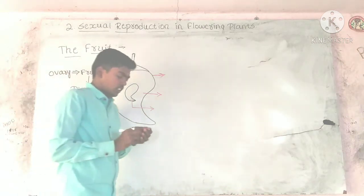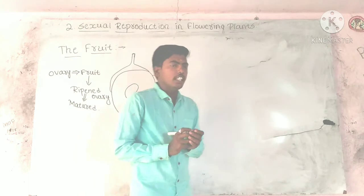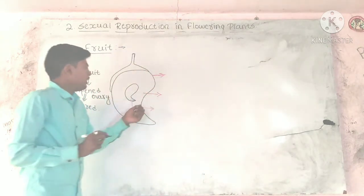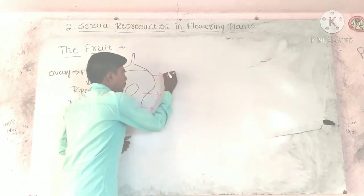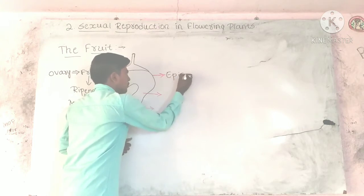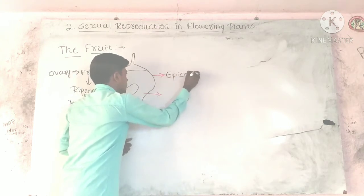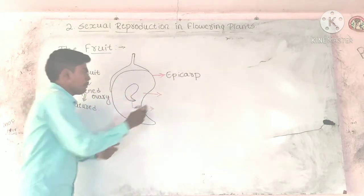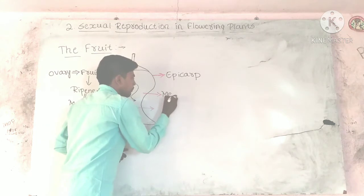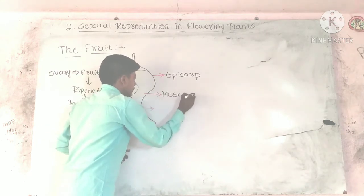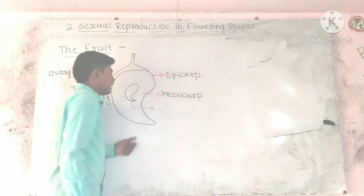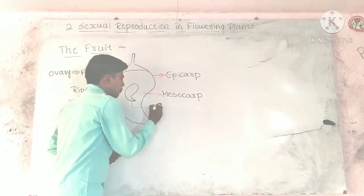Fruit consists of 3 layers. The outer layer is called epicarp. The middle layer is called mesocarp. The inner layer is called endocarp.